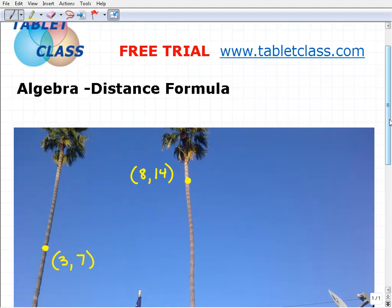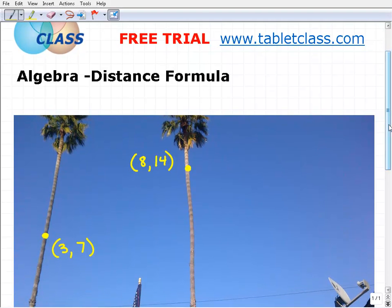It's actually pretty simple. Here we have two points, and these coordinates are on palm trees in the lovely state of California. You can imagine them to be on graph paper, whatever the case is, but the application is still the same.